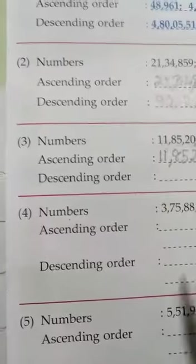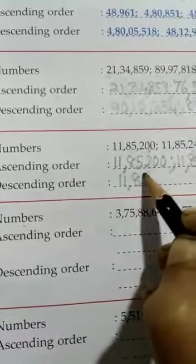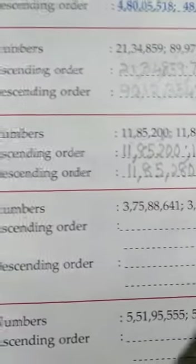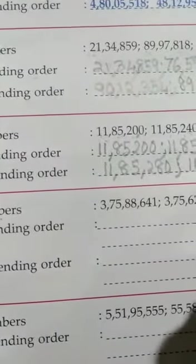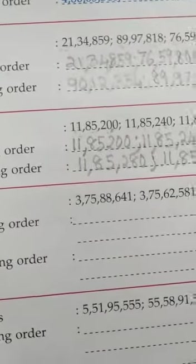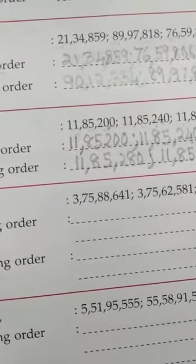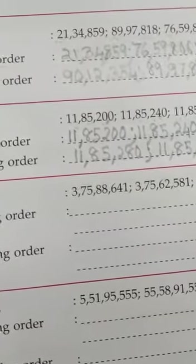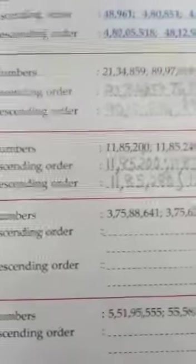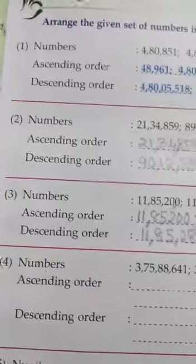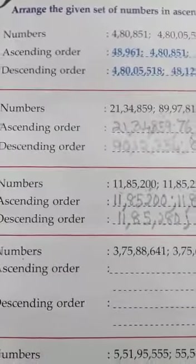Descending order will be the opposite of ascending. The last number you wrote in ascending order will be the first here. So the descending order is: 11,85,280; then 11,85,260; then 11,85,240; and finally 11,85,200. That's ascending and descending order. We did three sets of numbers today, and the rest we'll do tomorrow. See you tomorrow, children!